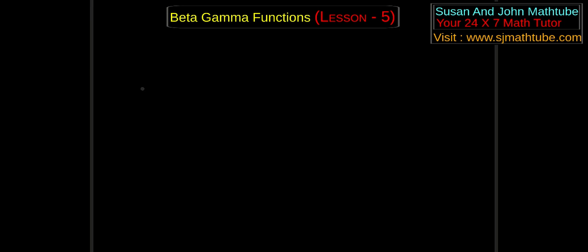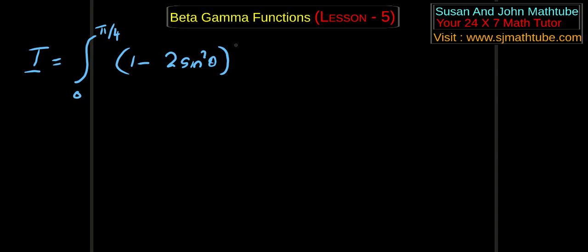We have a very special question. The question is really special because we are going to make a weird substitution — or it might look weird. There are many ways to do this question, but I like this weird substitution. We have the integral from 0 to π/4 of (1 - 2sin²θ)^(3/2) · cosθ dθ. We have a huge problem: the limit is not good. I was expecting 0 to π/2.